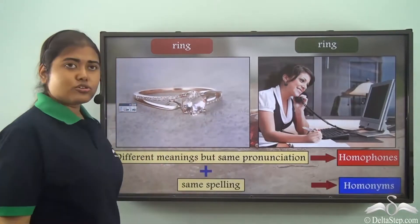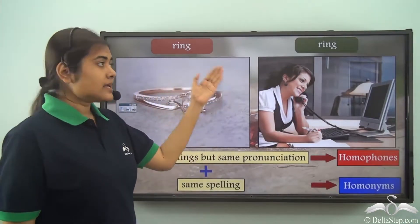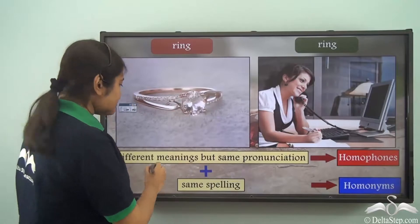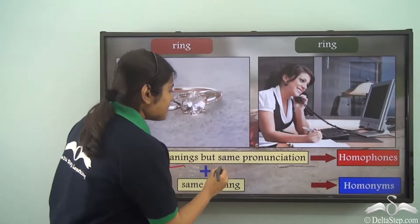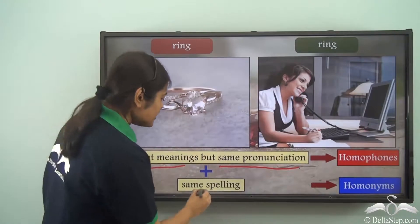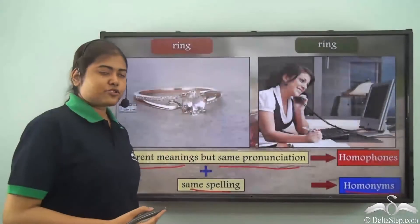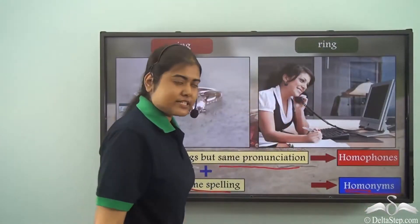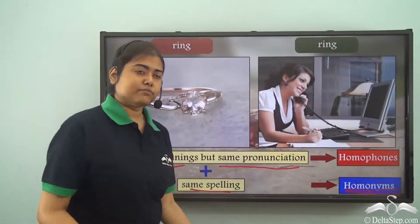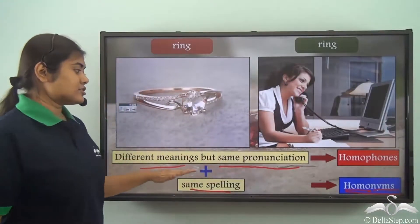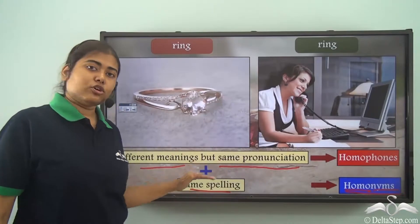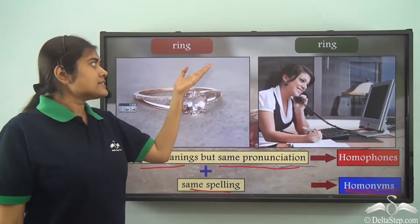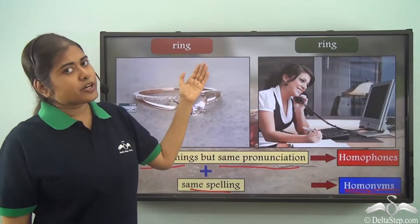But you will also note that in this case the spellings of the two words are also the same. So it is not just about different meanings but it is also about the same pronunciation and the same spelling. In this case 'homo' refers to the same and 'nyms' refers to names. So it is not just about the same sound but also the same name. Ring and ring are exactly the same in their spellings as well as in their pronunciation.